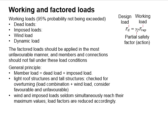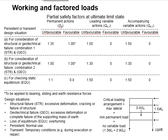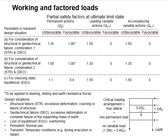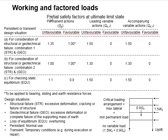In the previous video, we mentioned the partial factors of safety for the working loads. These can be referred from a table categorized into two main types of actions: permanent actions and variable actions. The permanent actions refer to the dead load, while the variable actions refer to the imposed load.